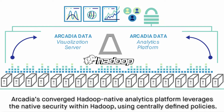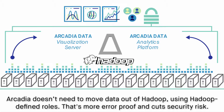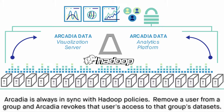Arcadia's converged Hadoop-native analytics platform leverages the native security within Hadoop using centrally defined policies. Arcadia doesn't need to move data out of Hadoop because it uses Hadoop-defined roles. That's more error-proof, and it cuts your security risk.